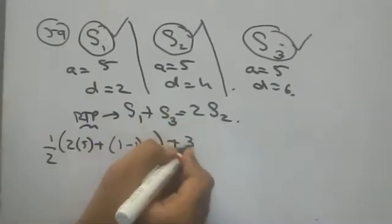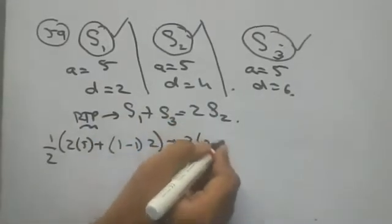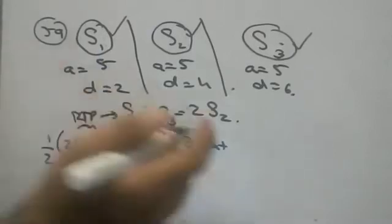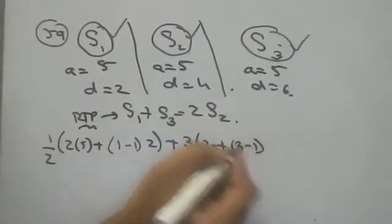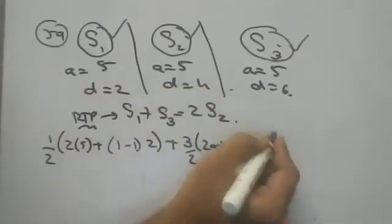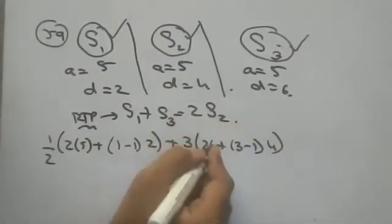S3 means how much? 3/2 into 2A plus 3 minus 1, common difference is how much? 6. And first term is phi only. This is LHS.